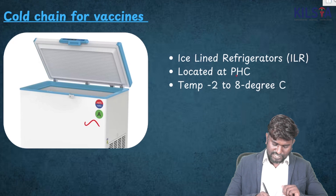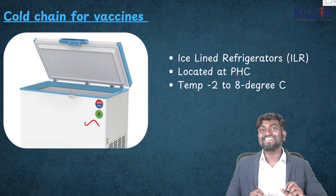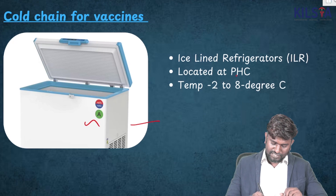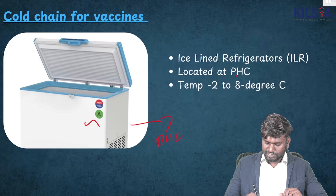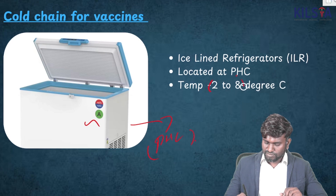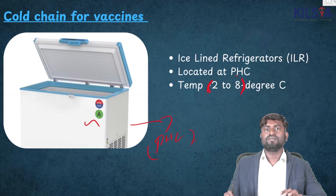This image is going to be the Ice-Lined Refrigerator. It is located at the PHCs. Most importantly, remember the temperature — it is going to be about 2 to 8 degrees Celsius.